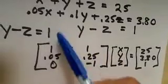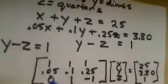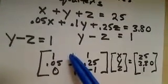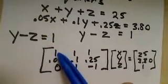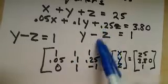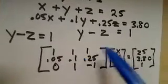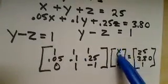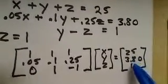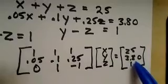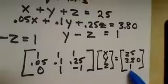So we've got x, y, z with coefficients 1, 1, 1 in the first row. The second row has coefficients 0.05 for nickels, 0.1 for dimes, 0.25 for quarters. And finally 0, 1, negative 1 for the third row. Our constant matrix is 25 for total coins, 3.80 for total money, and 1 for the difference of dimes minus quarters. We need to find the inverse now, and I'm going to let you do that — find the inverse with the calculator.